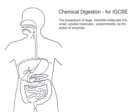The key definition of chemical digestion is the breakdown of large insoluble molecules. The two key words here are 'large' and 'insoluble' — molecules that are too big to pass through the villi within the small intestine, and insoluble meaning they cannot dissolve into the bloodstream. We need to break these down into molecules that are small and soluble.